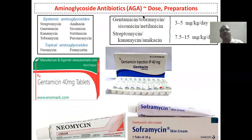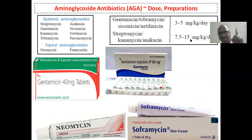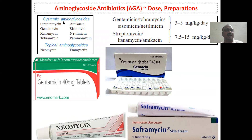For aminoglycoside dosing: gentamicin, tobramycin, sisomicin, netilmicin — 3 to 5 mg per kg of body weight per day. Streptomycin, kanamycin, amikacin is almost double — approximately 7.5 to 15 mg per kg per day. These are systemic and topical classifications.